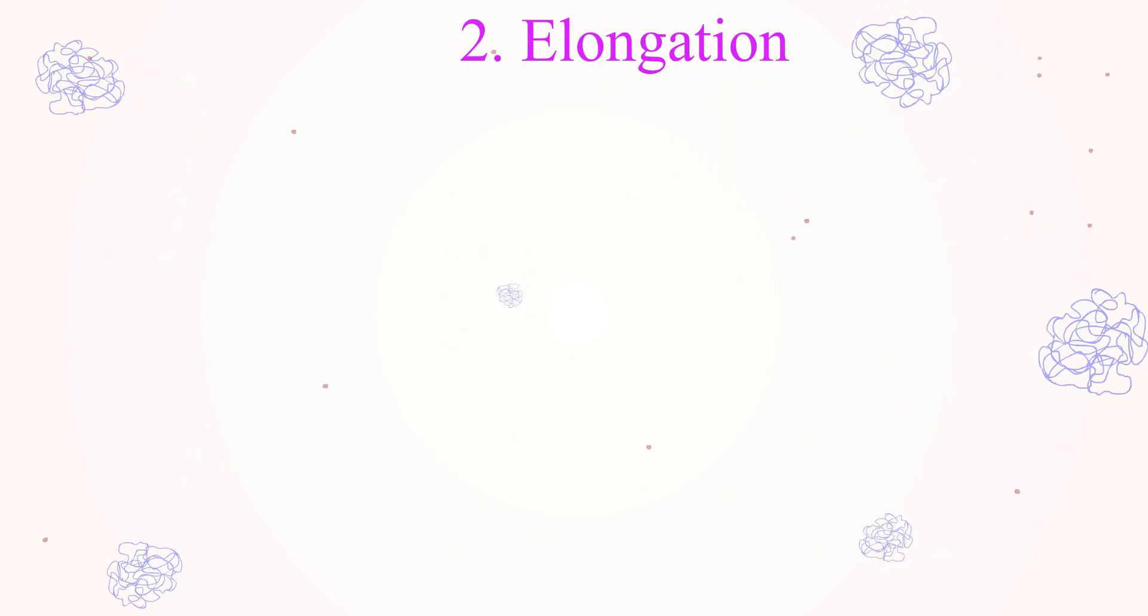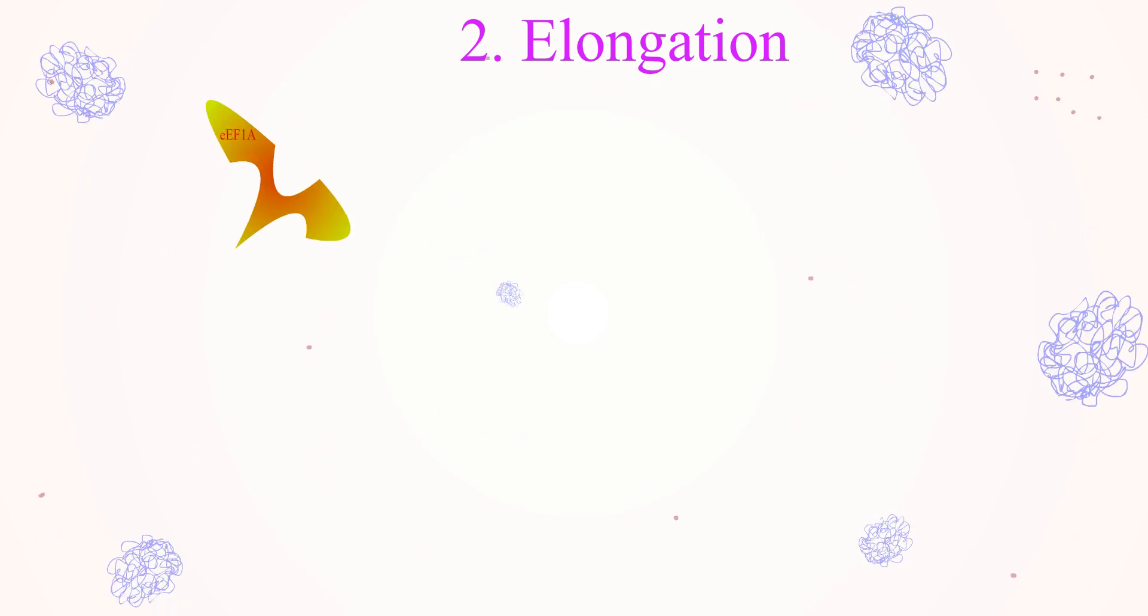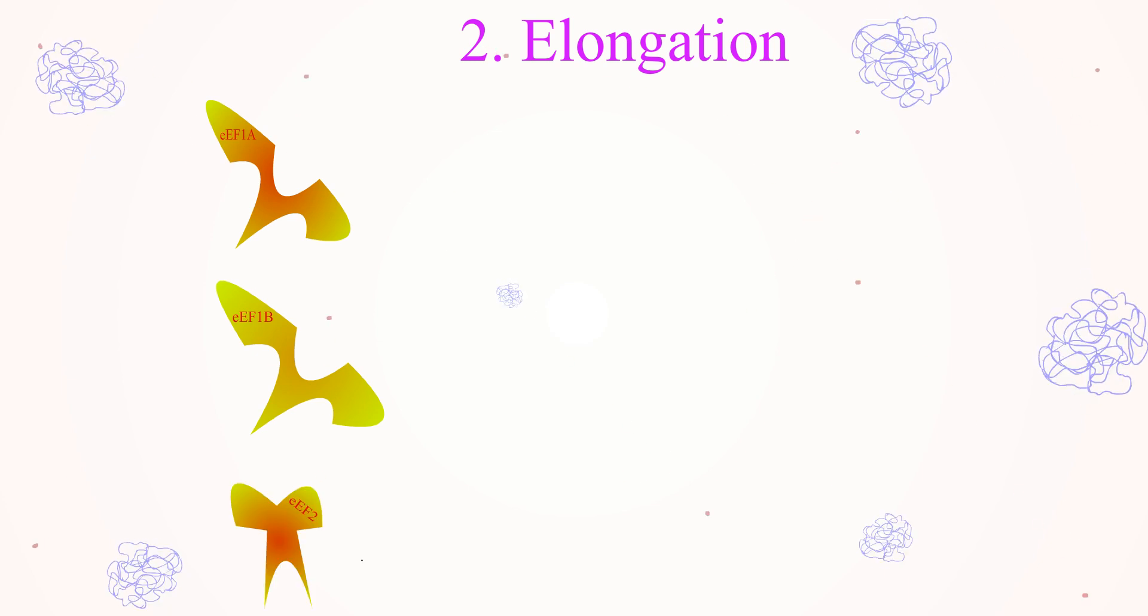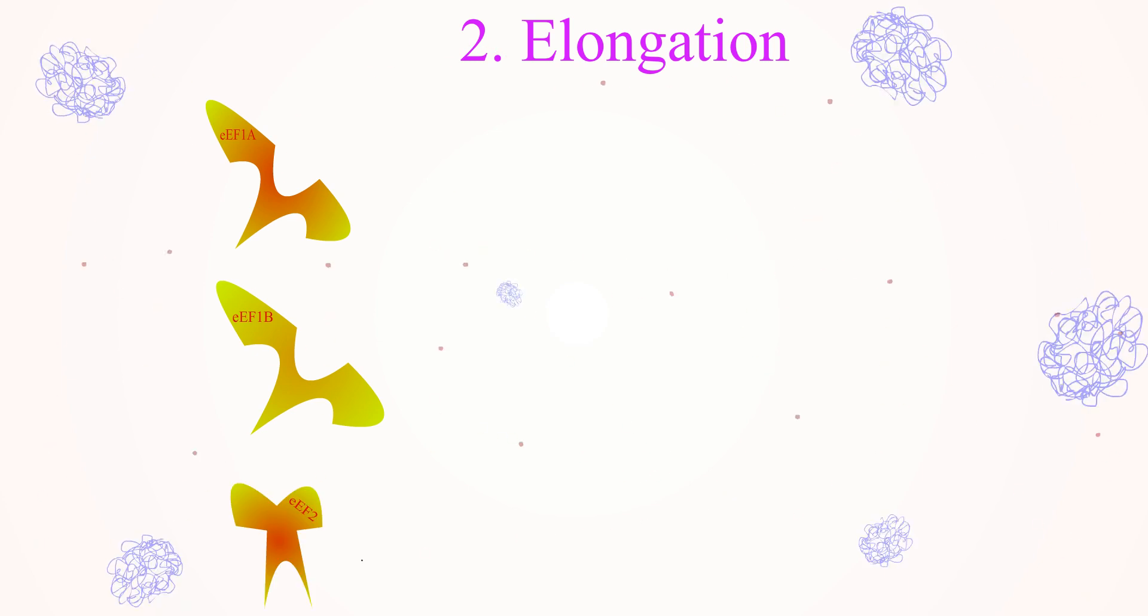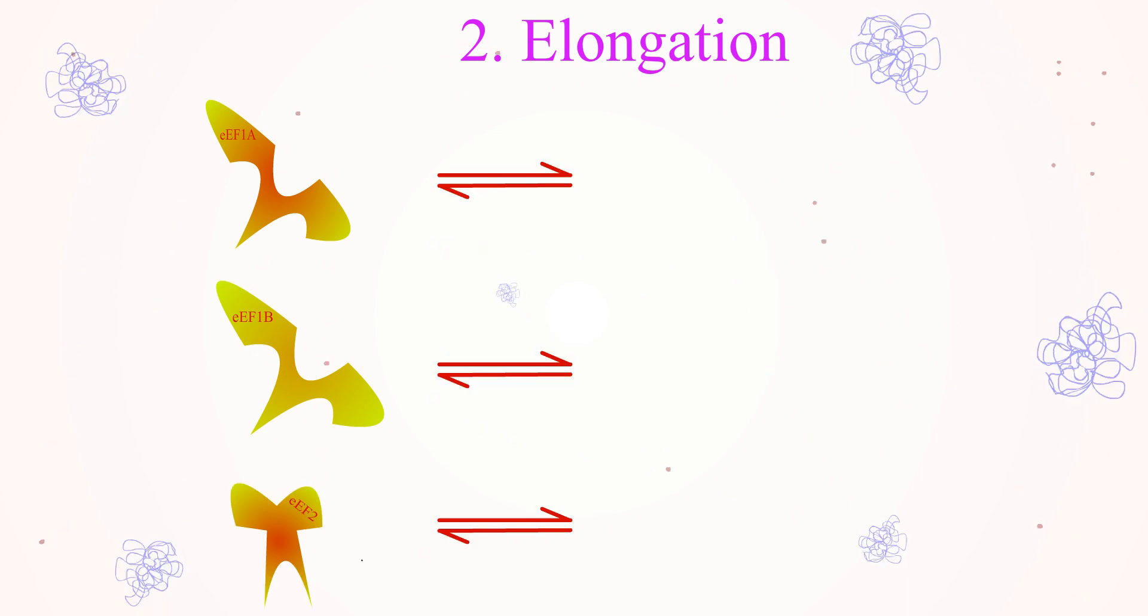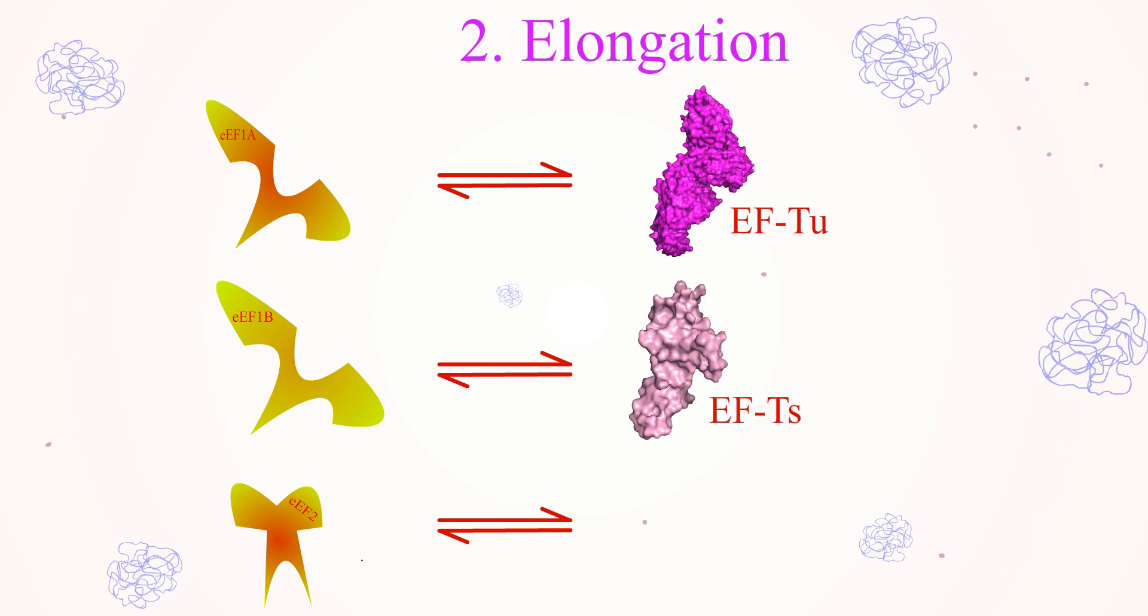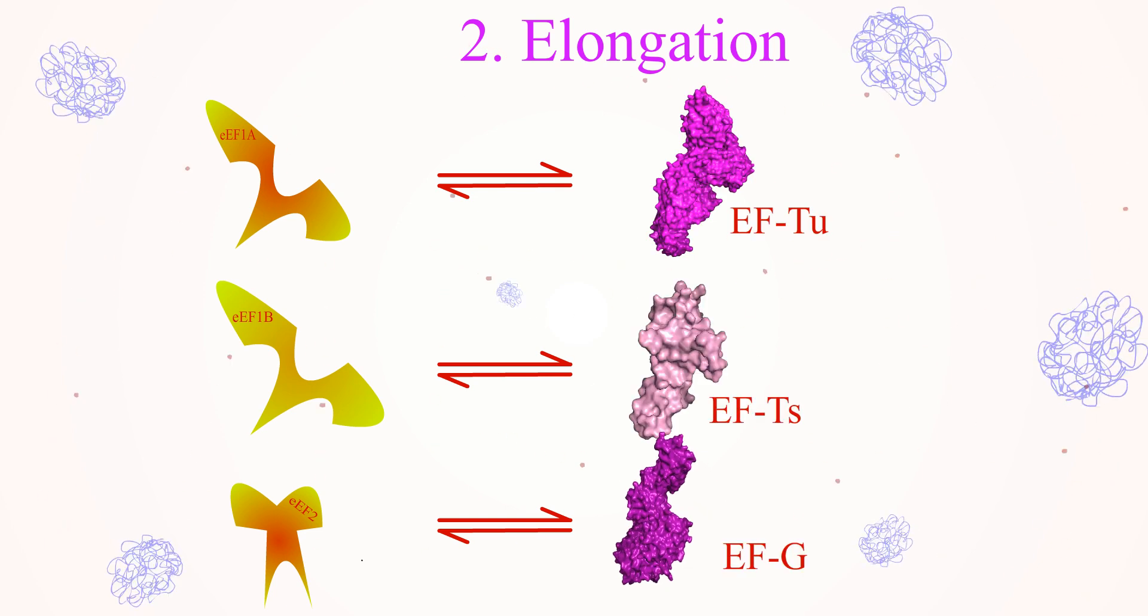Stage 2. Elongation. Eukaryotic elongation factors will help in the elongation process, namely eukaryotic elongation factor 1A, eukaryotic elongation factor 1B, and eukaryotic elongation factor 2, which have functions similar to the prokaryotic elongation factors EF-TU, EF-TS, and EF-G.